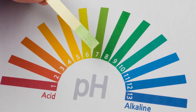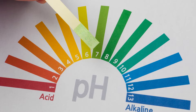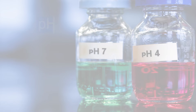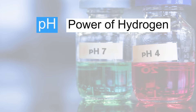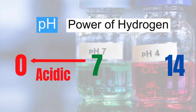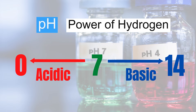To measure the acidity of a solution, we use the pH scale. pH is an abbreviation for the power of hydrogen. The pH values range from 0 to 14. Acidic solutions have a pH value less than 7, while basic solutions have a pH value greater than 7. Solutions having a pH of 7 are said to be neutral solutions.